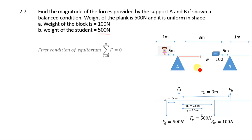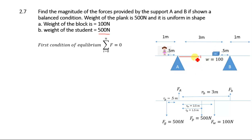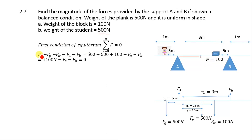Let's solve this numerical. First we will apply the first condition of equilibrium, which states that the sum of all forces acting on a body is equal to zero. Since this plank is in a balanced condition, the sum of all forces acting on it will equal zero. So the force due to the student (Fg) plus the force due to the plank (Fp, which is 500 N) are included in the equation.